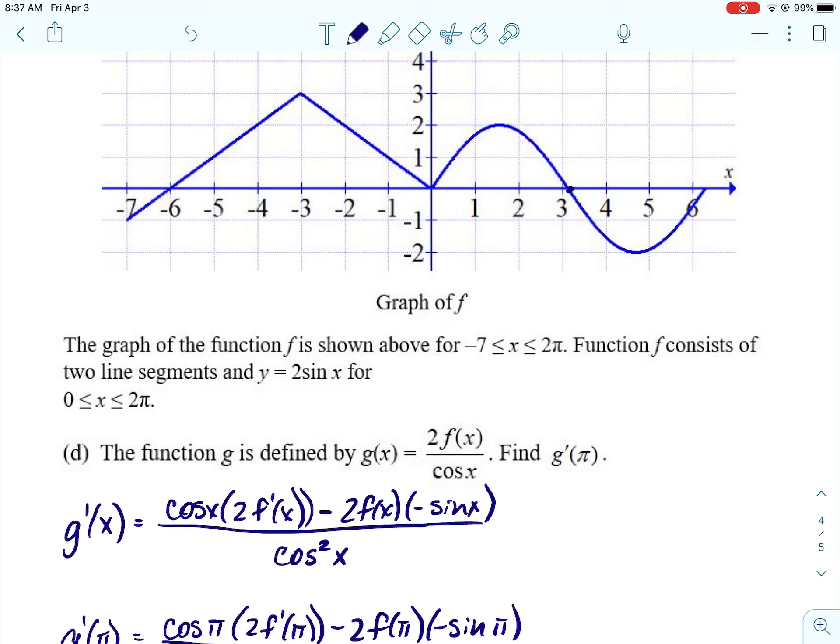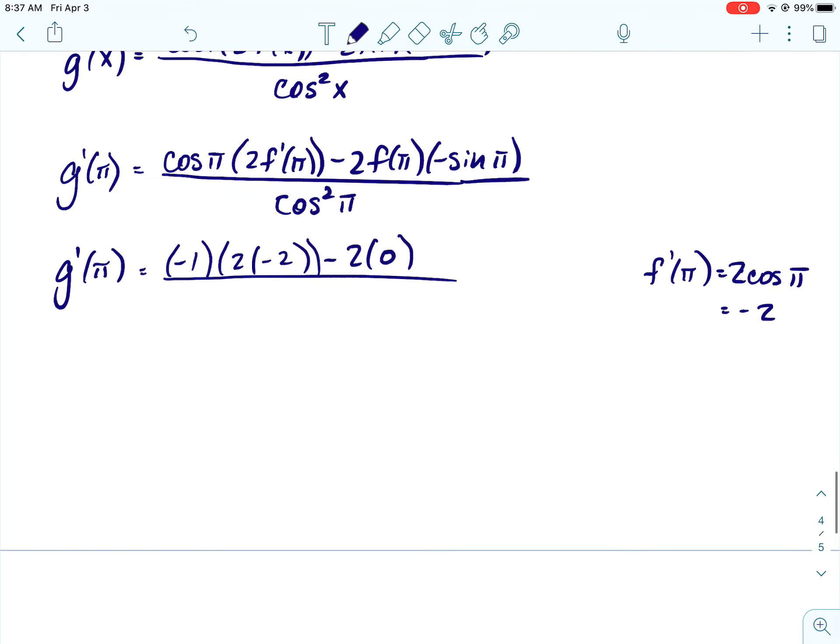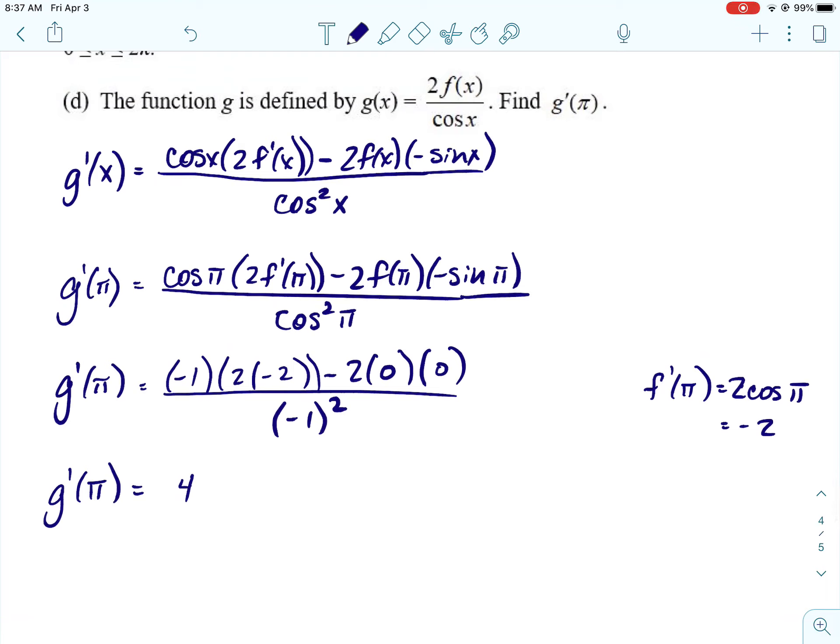So, we're doing f prime of π. Okay, we need to know what the 2 cosine of π is. And that's just going to be negative 2. Alright, and then for f of π, we'll go to the graph. And then this right here is when x is π, so that's going to be 0. And then negative sine of π is also 0, which doesn't matter. And then cosine of π is negative 1. Alright, so it looks like negative 1 times 2 times negative 2 is 4. And then minus 0 divided by 1 is 4. So, this is another one where...